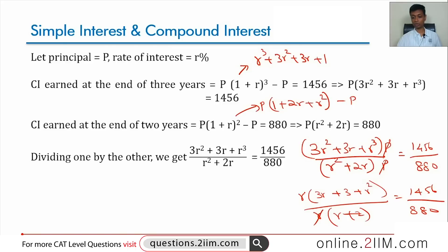R is not 0, so we knock this off. Then we cross multiply this, get a quadratic and then simplify that. I am going to try to do this slightly differently. We get this as 1456 by 880. We can simplify this. 1456, this is 728 by 440.